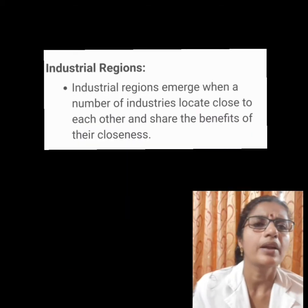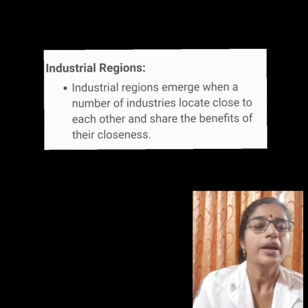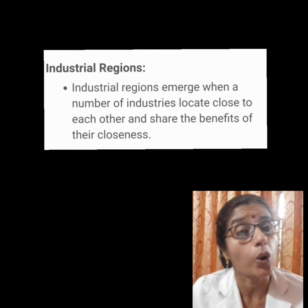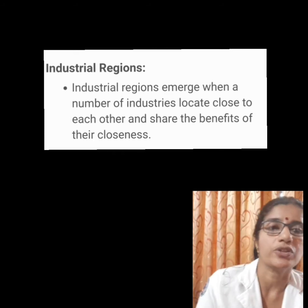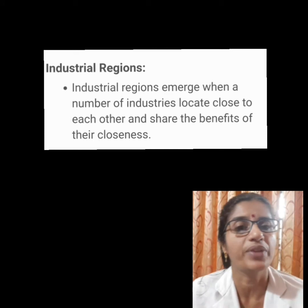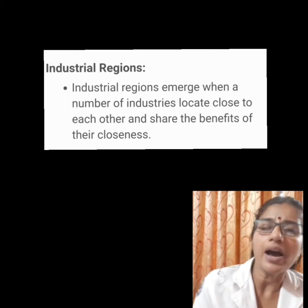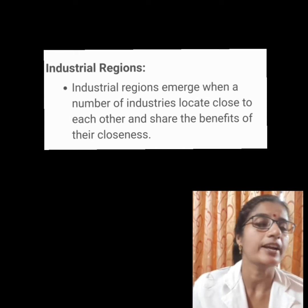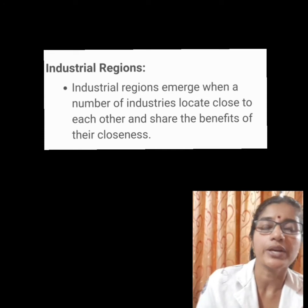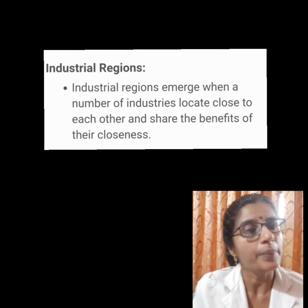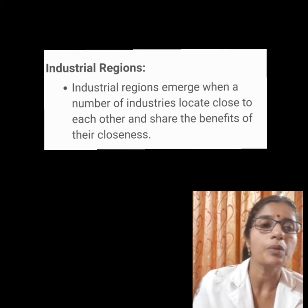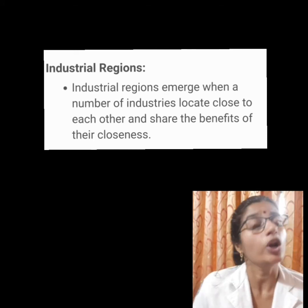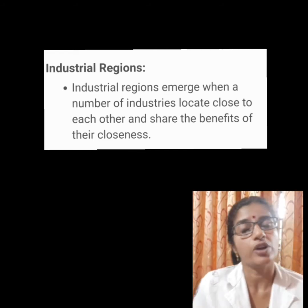Children, what are industrial regions? Industrial regions emerge when a number of industries locate close to each other and share the benefits of their closeness. India has several industrial regions like Mumbai-Pune Cluster, Bangalore, Tamil Nadu region, Hooghly region, Ahmedabad-Baroda region, Chottanagpur industrial belt, Vishakhapatnam-Guntur belt, and Kollam-Thiruvananthapuram industrial cluster, etc.